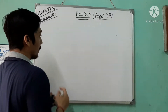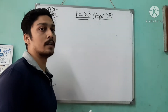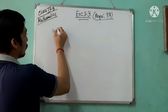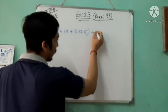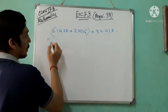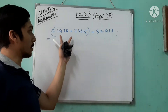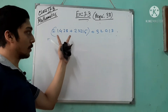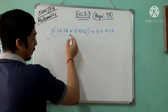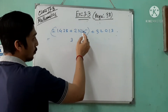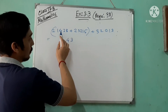Property number four is grouping. If you group the numbers, the sum remains the same. Suppose 21,428 plus 23,215 plus 32,013. I have grouped the first two terms in a bracket. So you do the addition inside the bracket first: eight plus five is thirteen, write three and carry one. One plus one is two, two plus two is four, two plus four is six.